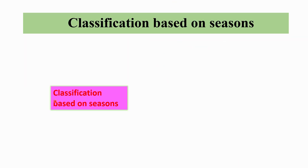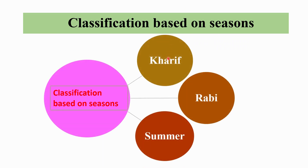Classification based on seasons has three types: Kharif season, Rabi season, and Summer season. Kharif season occurs during June–July or September–October and requires wet, warm weather. Rabi season crops are grown during October–November or January–February, requiring cold to dry weather and longer day length for flowering. Summer season crops are grown during February–March or May–June, requiring dry weather and longer day length for the flowering period.